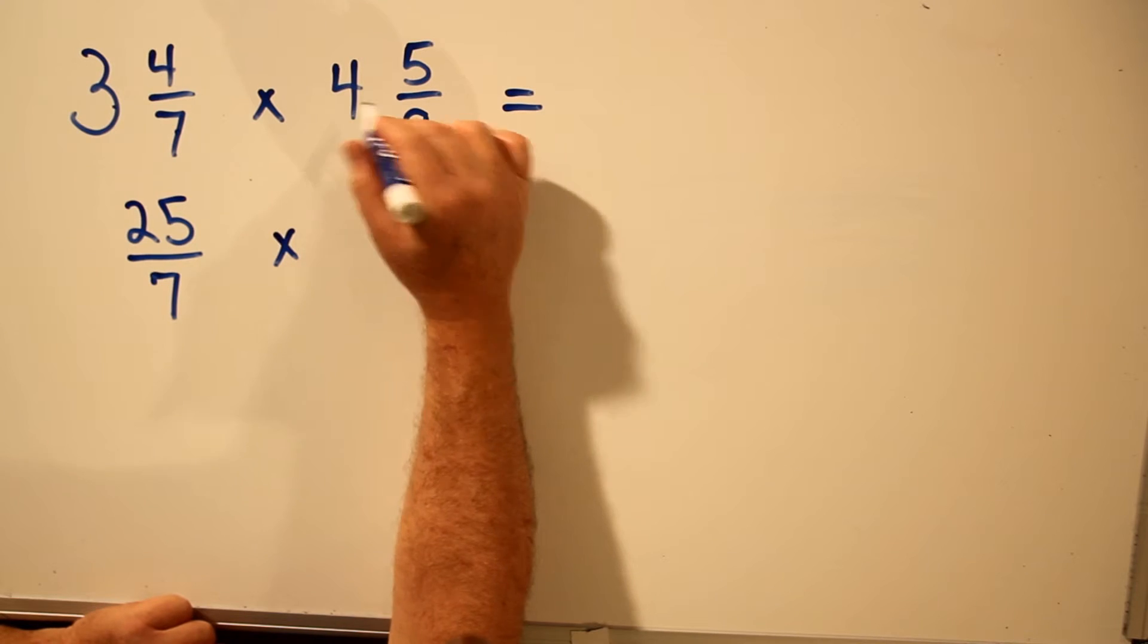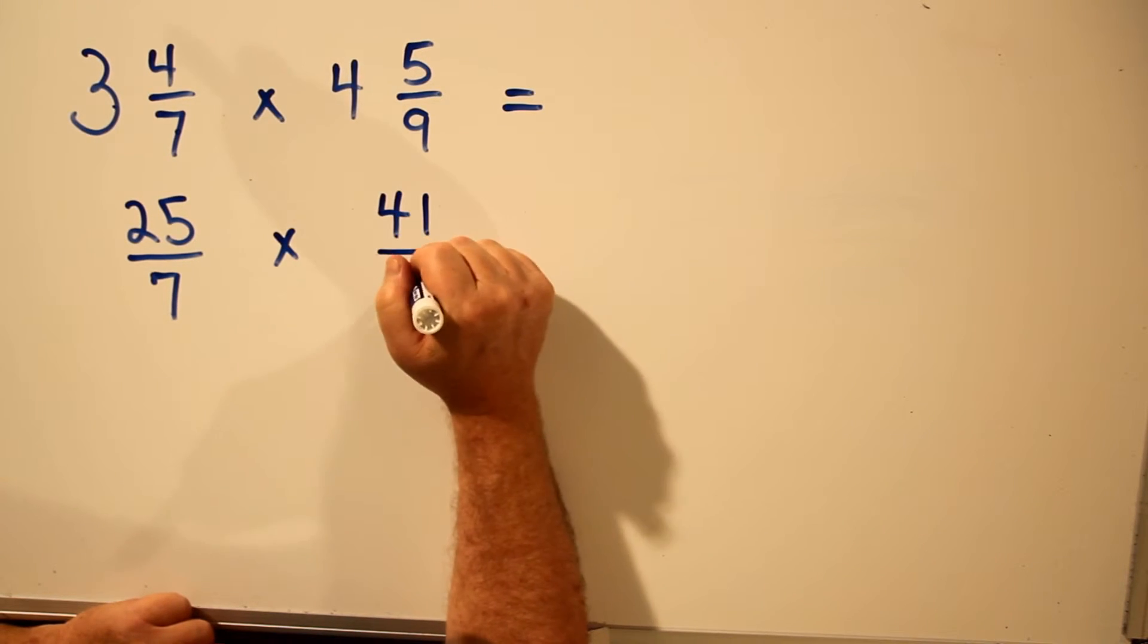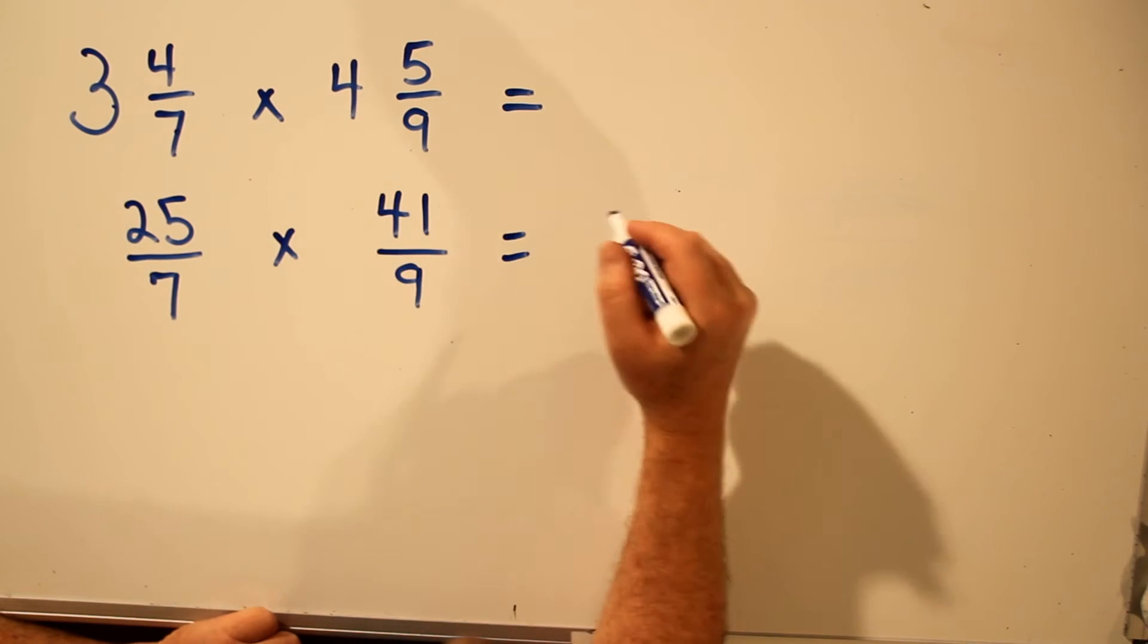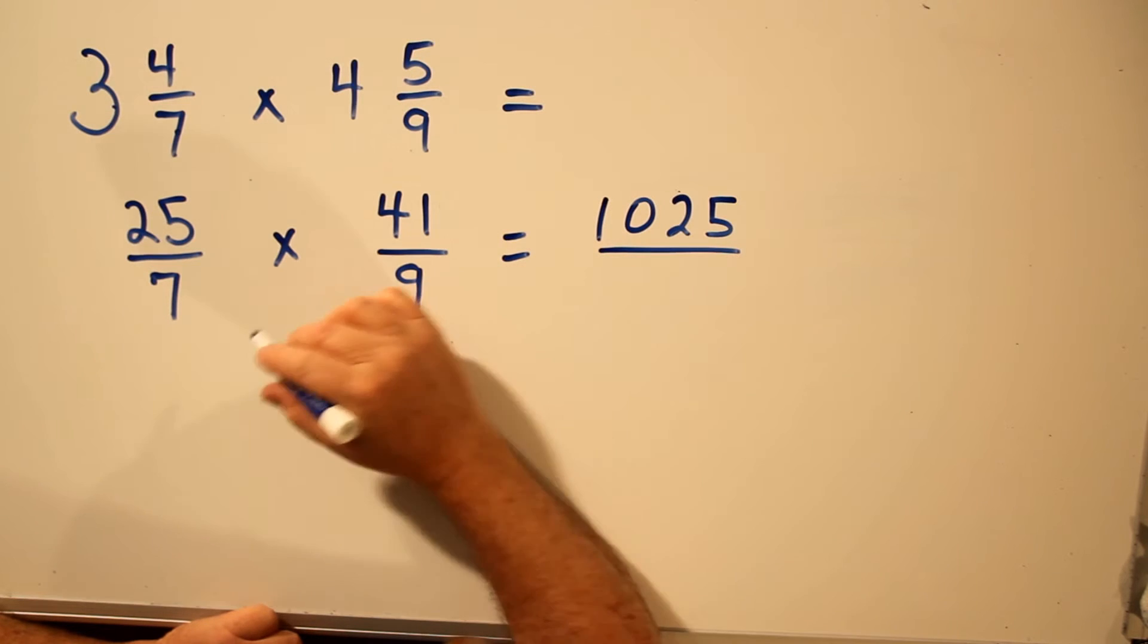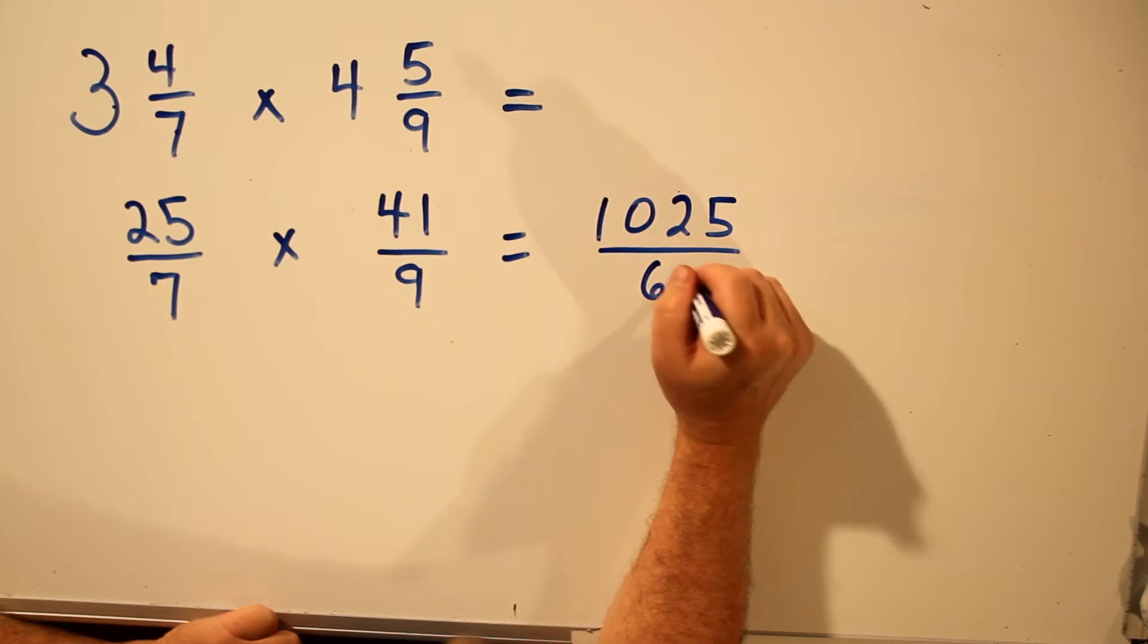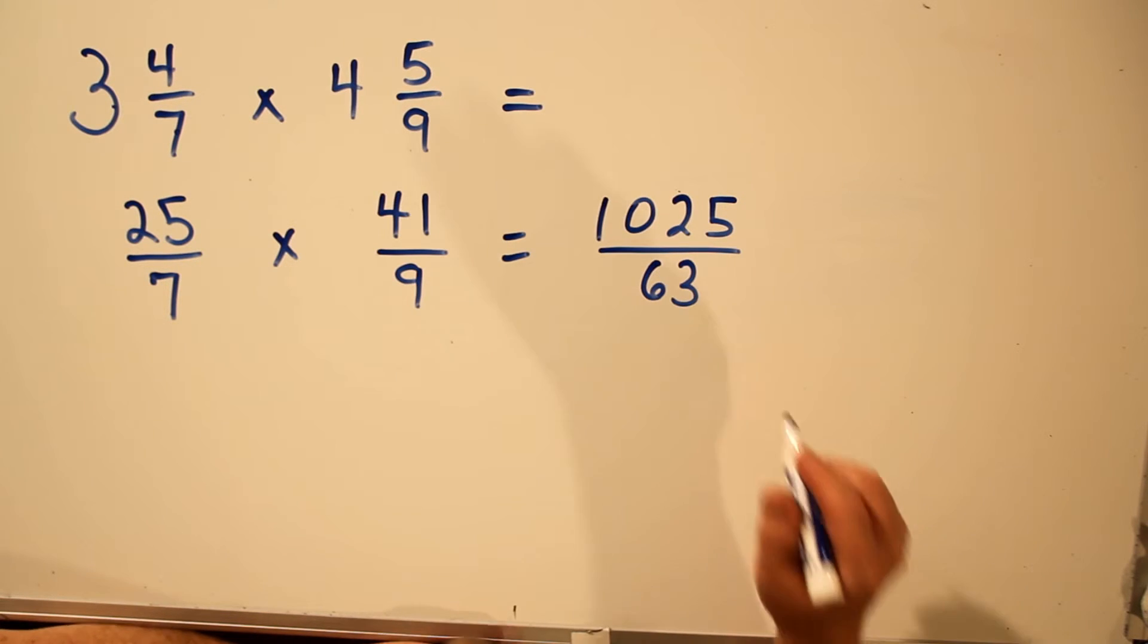Over here we have 4 times 9 is 36, plus 5 is 41. Keep the bottom number the same. 25 times 41 is 1025. And 7 times 9 is 63.